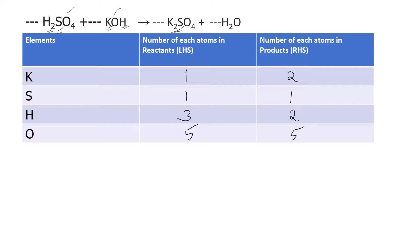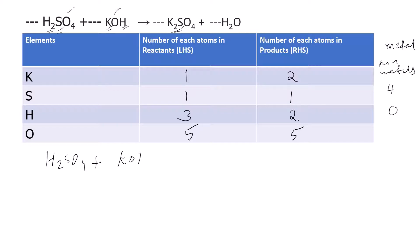When balancing equations, we follow this order: first metals, then non-metals, then hydrogen, and then oxygen. Starting with potassium, I write H₂SO₄ + KOH gives K₂SO₄ + H₂O and put a coefficient of 2 in front of KOH so the number of potassium atoms is the same on both sides.